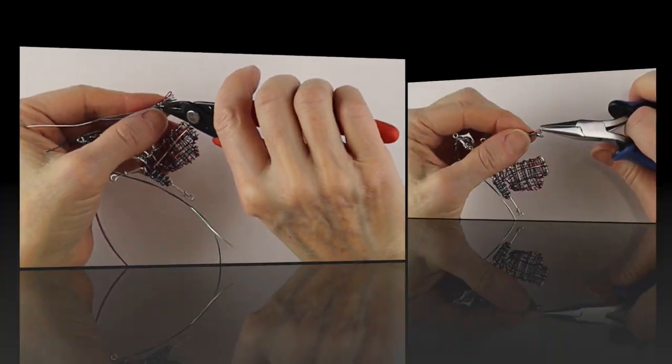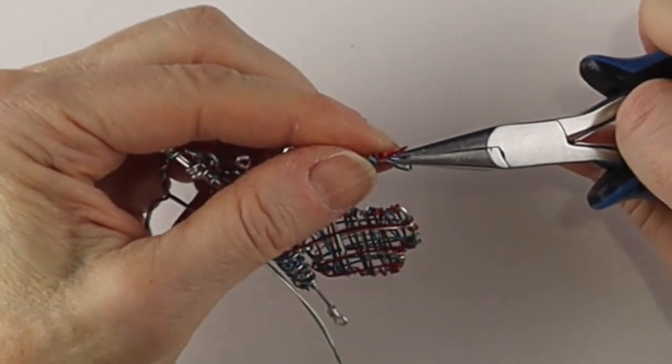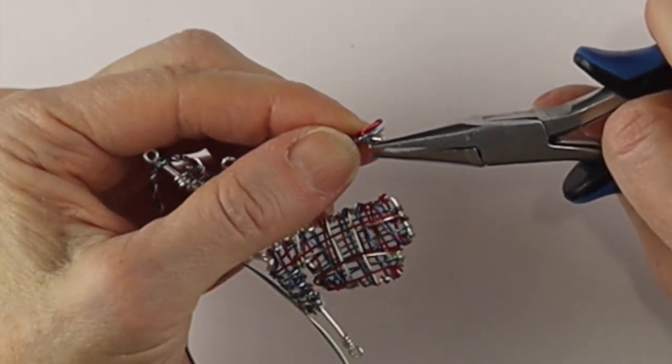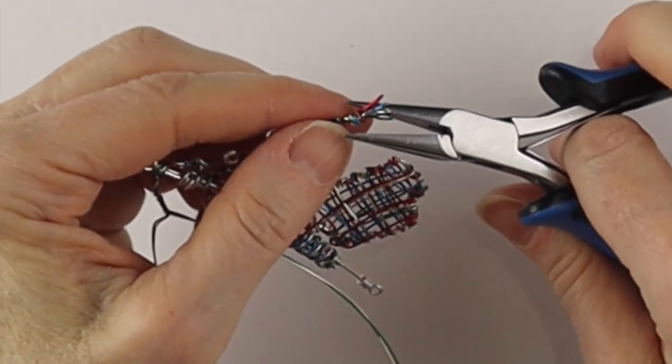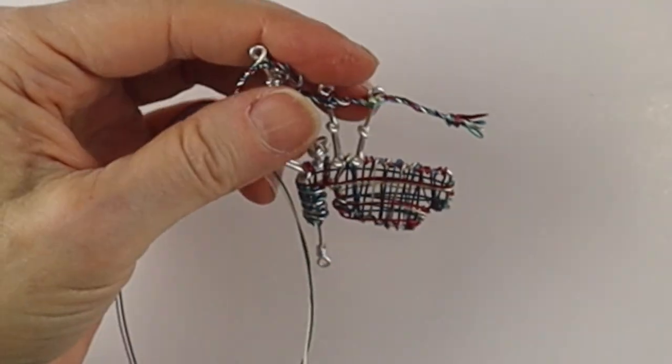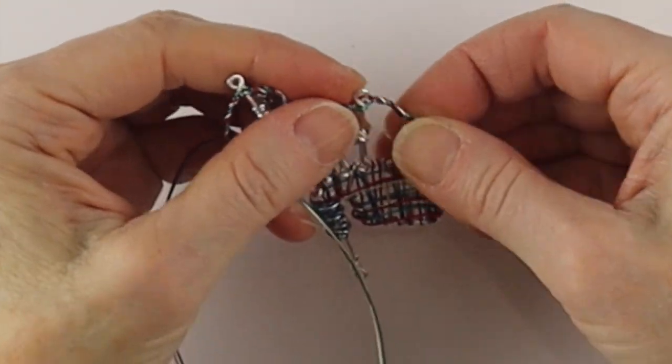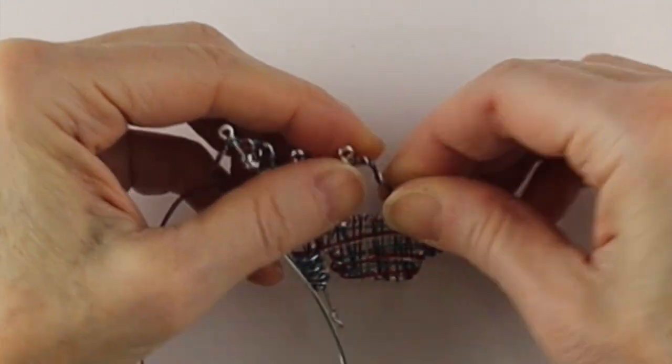Give it another little clip, and then with your flat pliers you can adjust the tassels to spread them out a little bit. Pinch the end there so there's no little sharp bits. Adjust the position to make it look like it's sort of flowing.